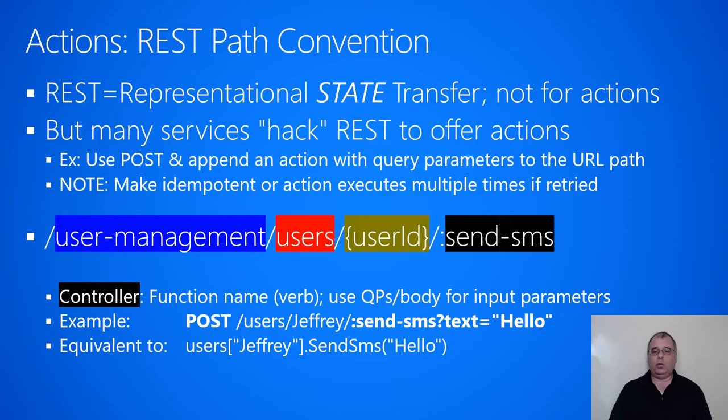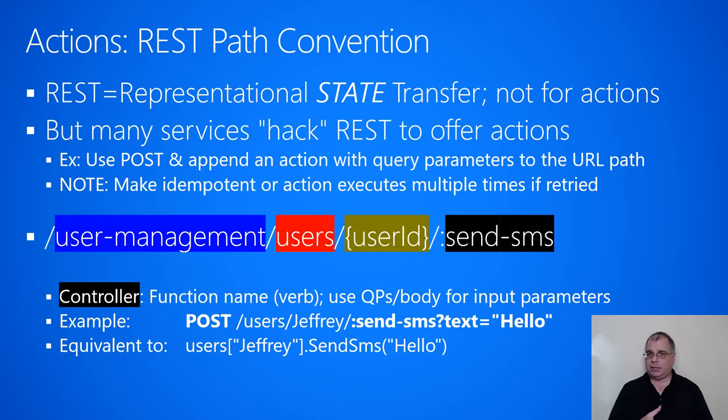We looked earlier at how the URL path should be structured to talk to a resource — you have the collection, a slash, an id, possibly a sub-collection, and possibly another id within the sub-collection. For the path when it regards actions, you would use something very similar. So it's slash user management, slash users as the collection, then the user id identifies a resource within the collection. And we're going to use this with the POST method now to do an action.